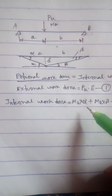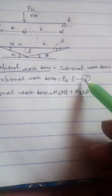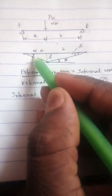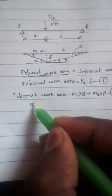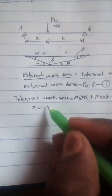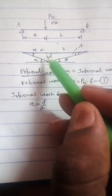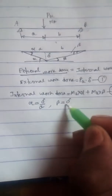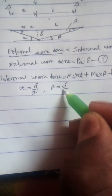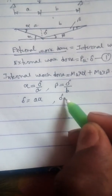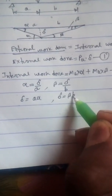Since alpha and beta are unknown, I have to replace them. From the geometry, alpha equals delta divided by a, and beta equals delta divided by b, because delta equals a into alpha and delta equals b into beta.